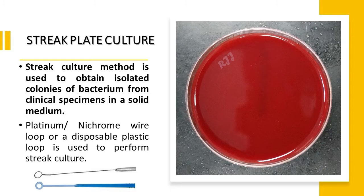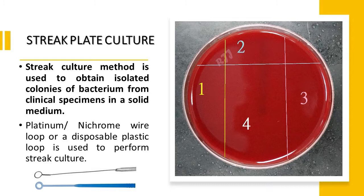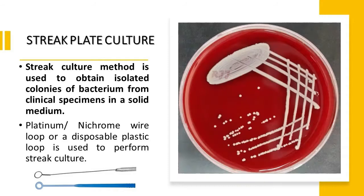Platinum or Nichrome wire loop or a disposable plastic loop is used to perform the streak culture technique. In the streak plate technique, the culture plate is divided into four quadrants. Quadrant one has the highest growth, and when moved to quadrants two to four, the density decreases. Isolated colonies are obtained in the third and fourth quadrants.